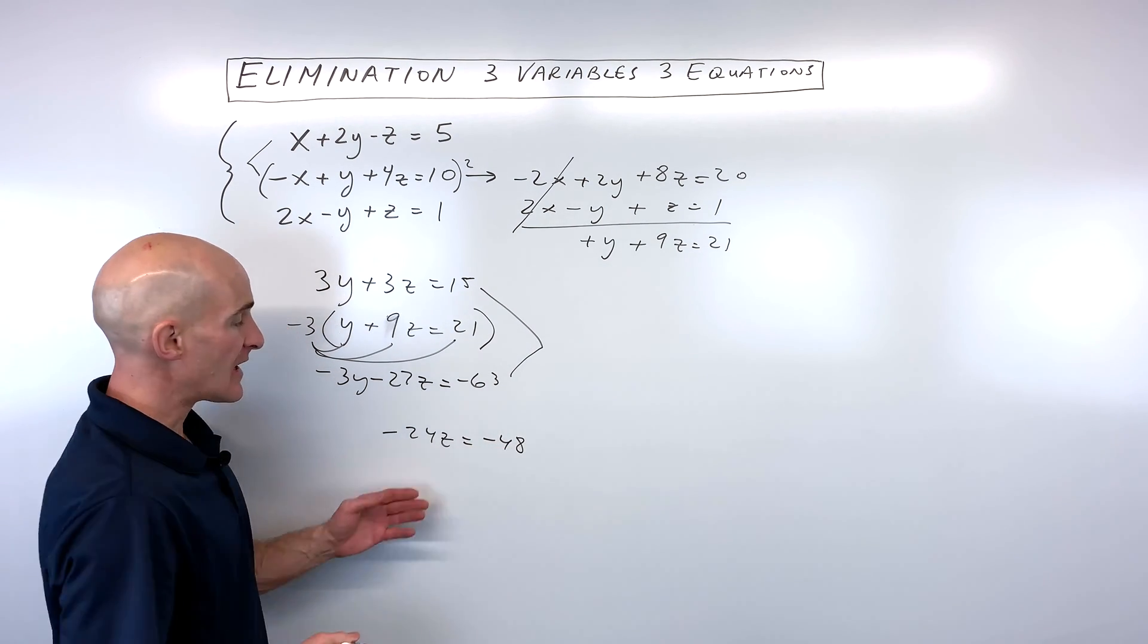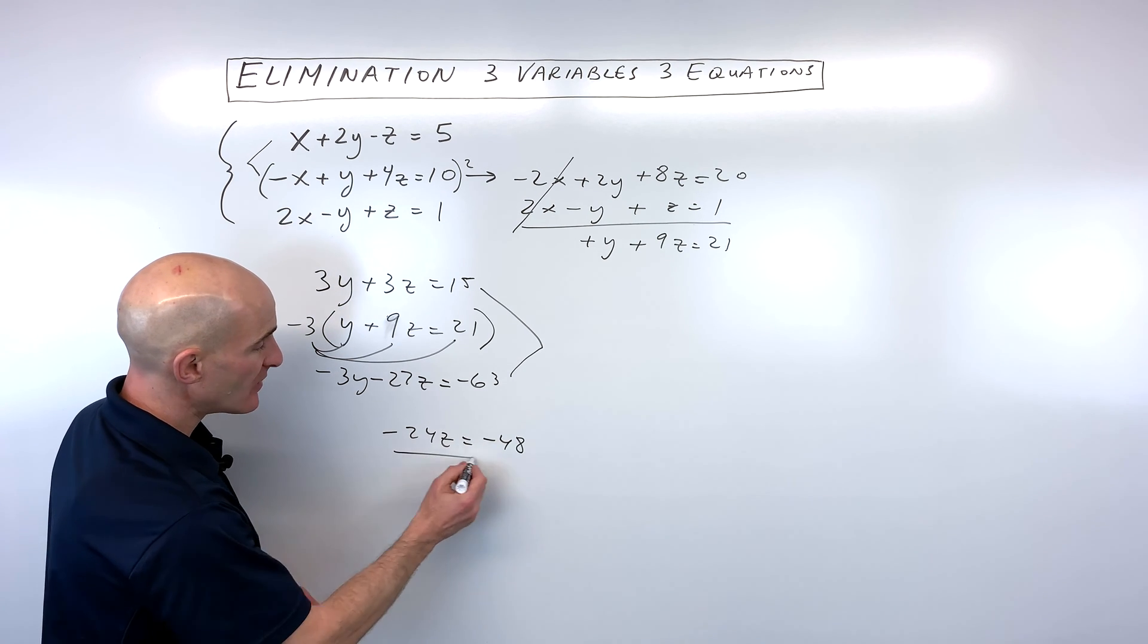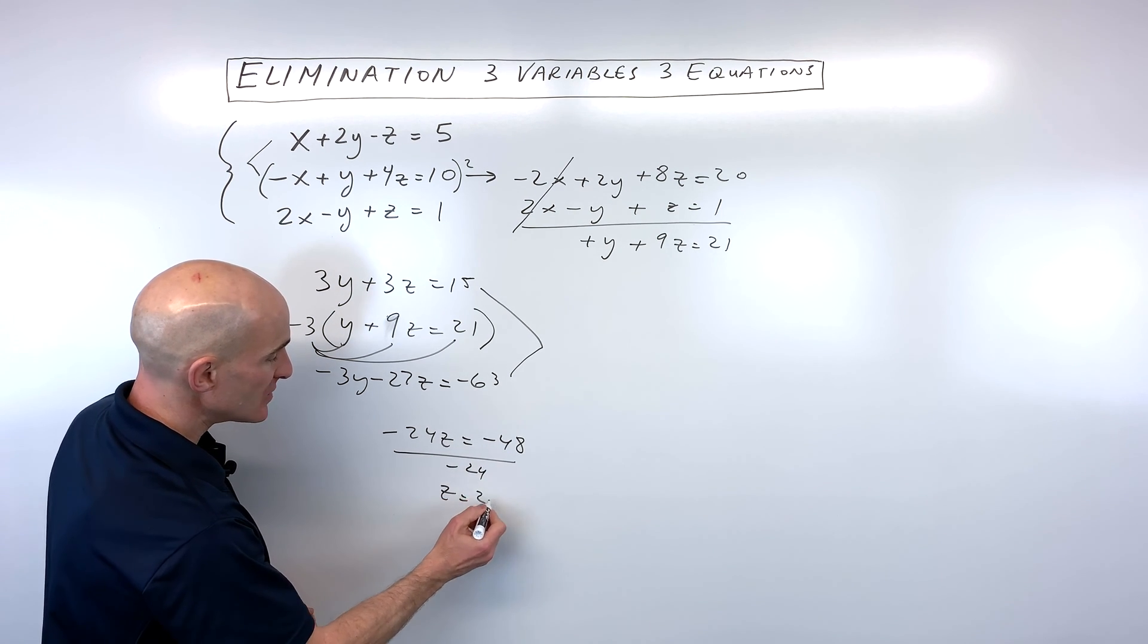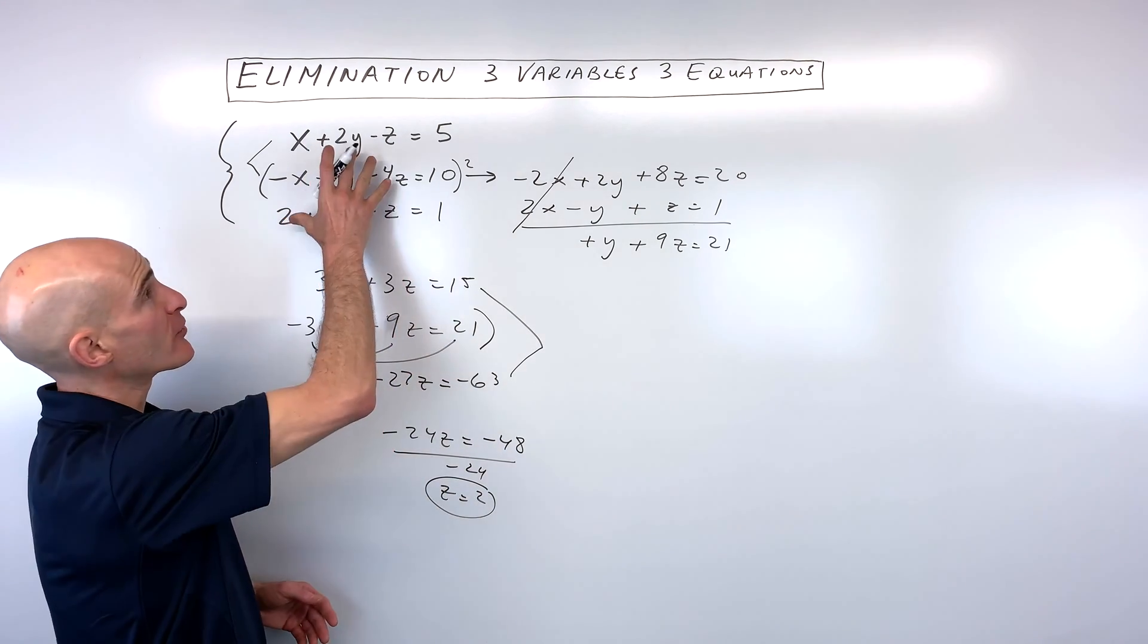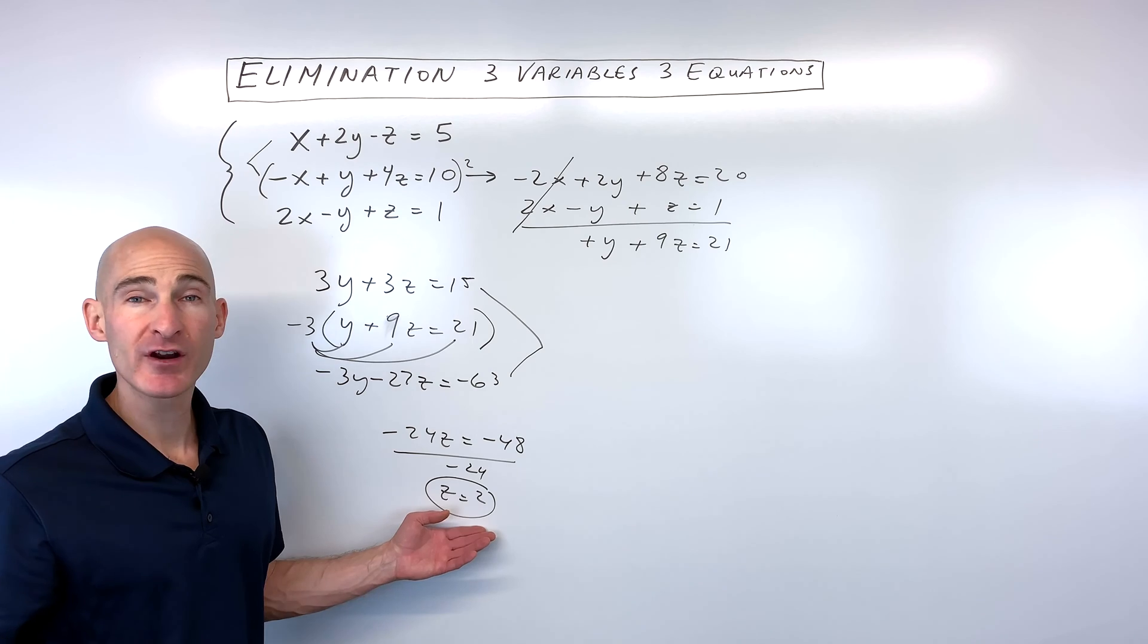So that's down to one variable, one equation. All we have to do now is divide both sides by negative 24. And you can see that z is equal to 2. So we went from three variables, three equations, down to two variables, two equations, down to one variable, one equation.